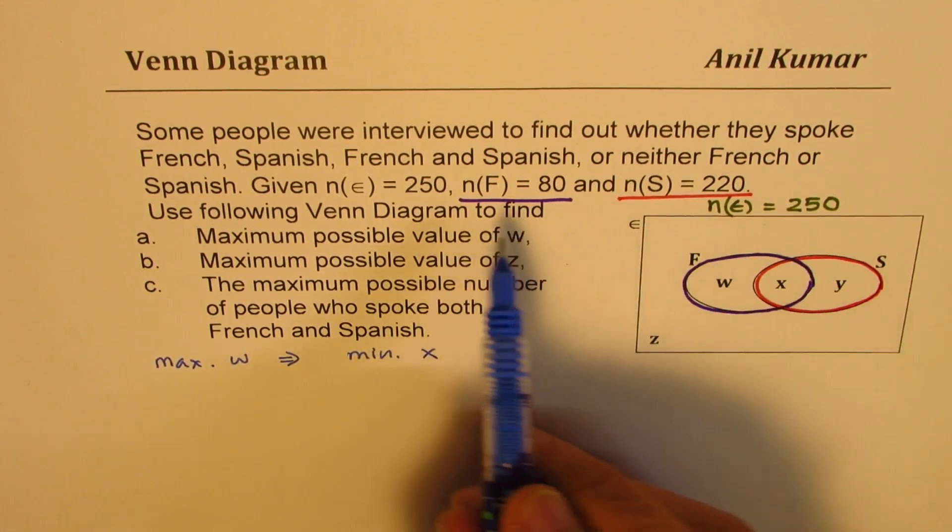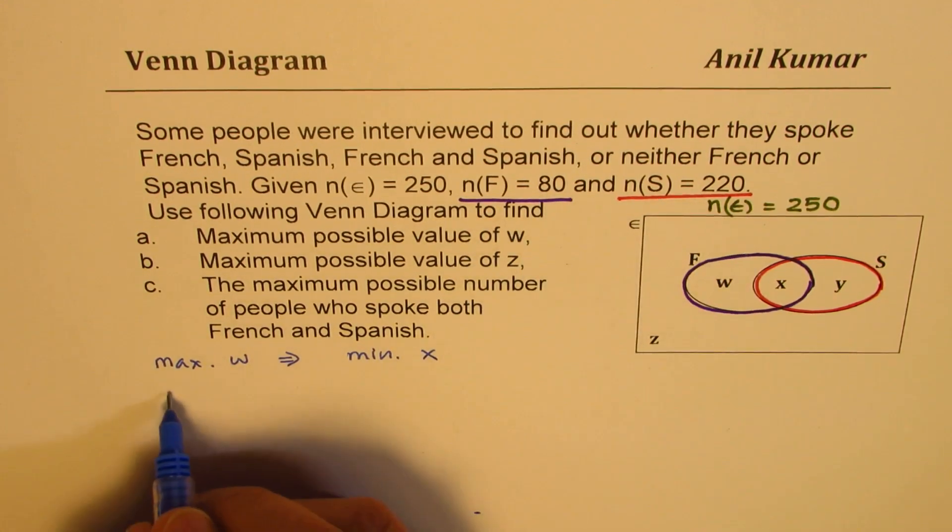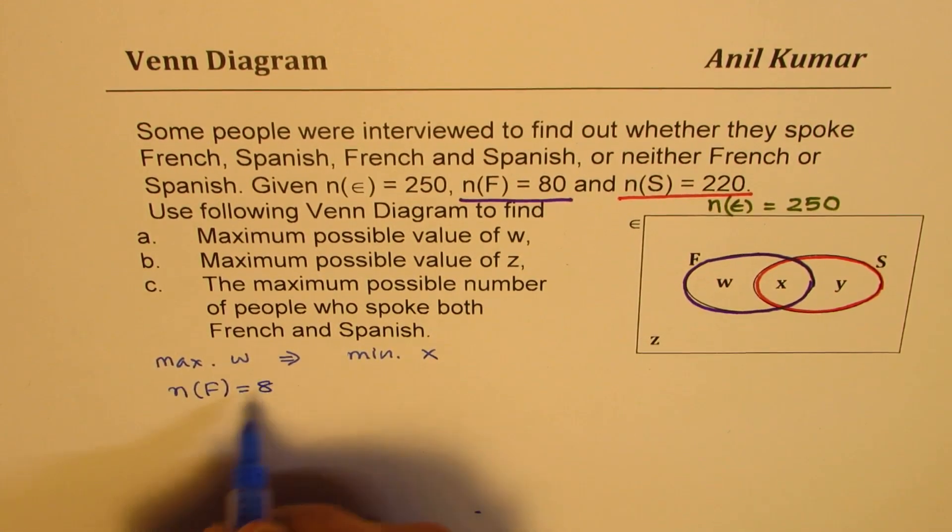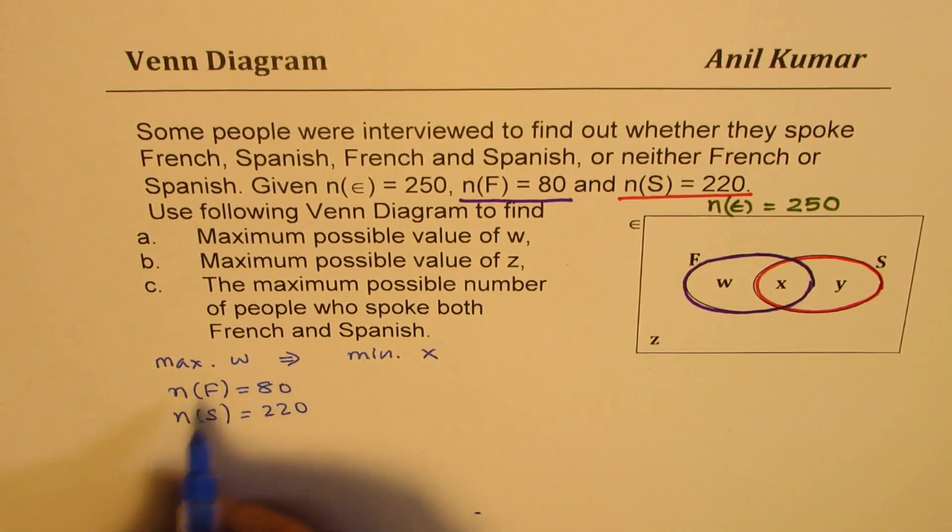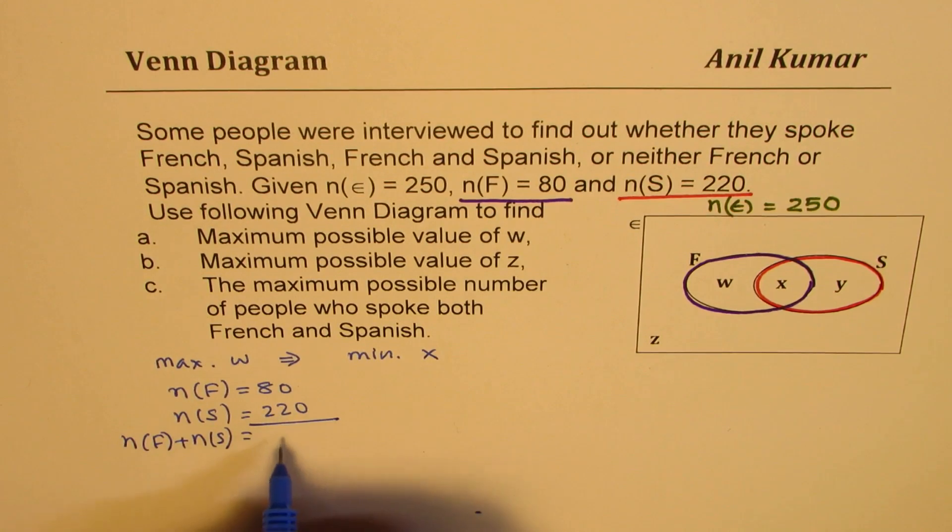Well, since we know these numbers, those who speak French is 80, those who speak Spanish is 220. So if we add them up, what do we get? If I add those who speak French plus those who speak Spanish, I get 300. Now 300 is much more than 250. So that means something is wrong.